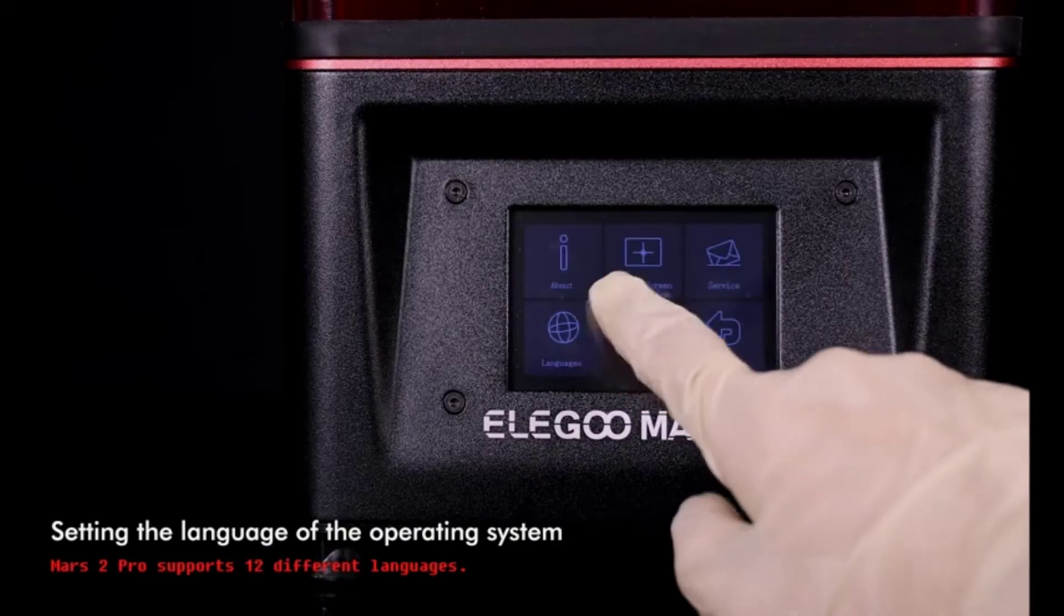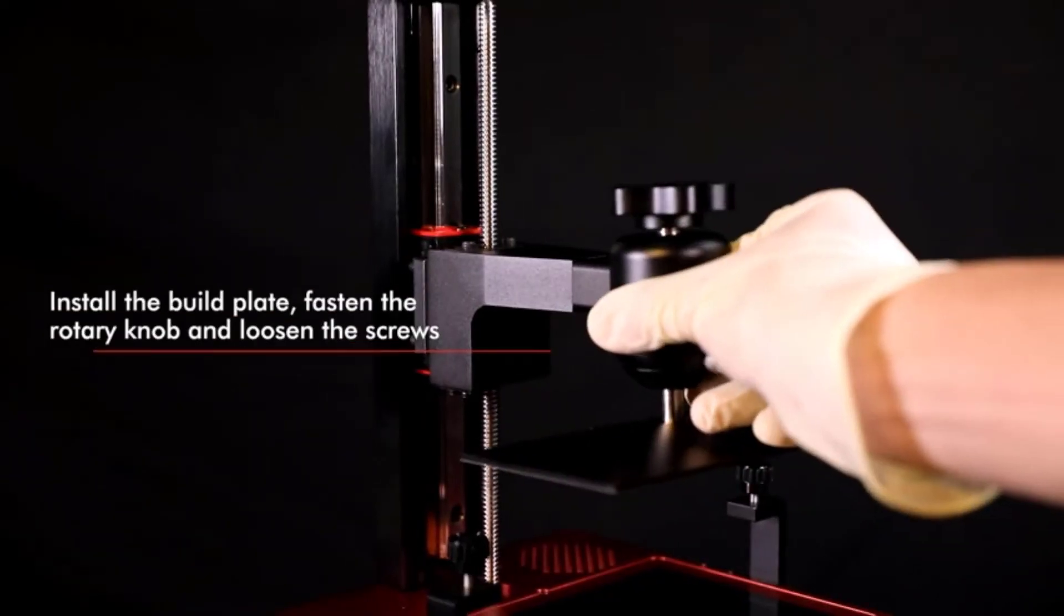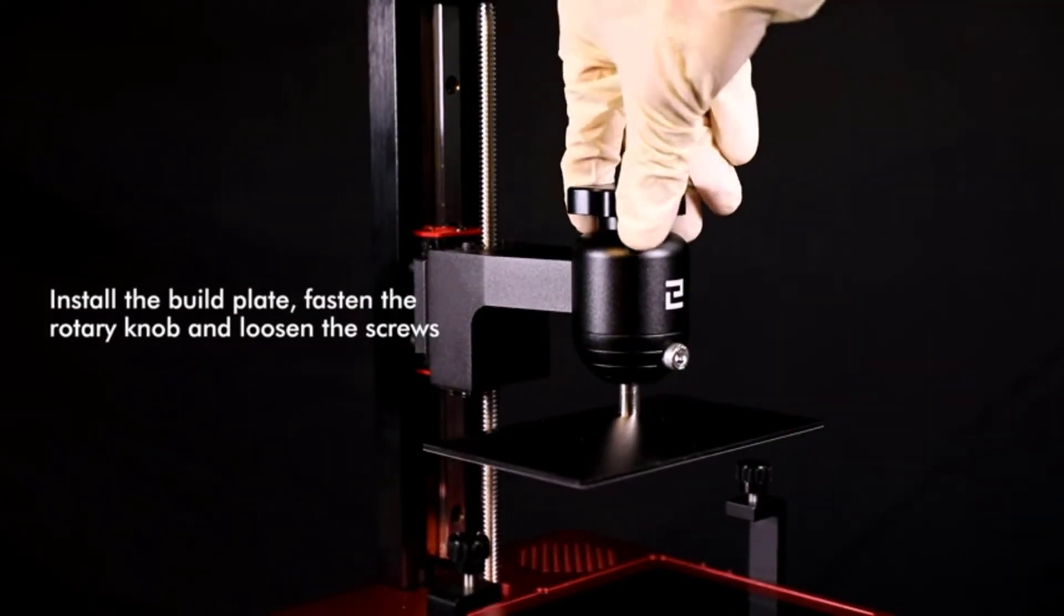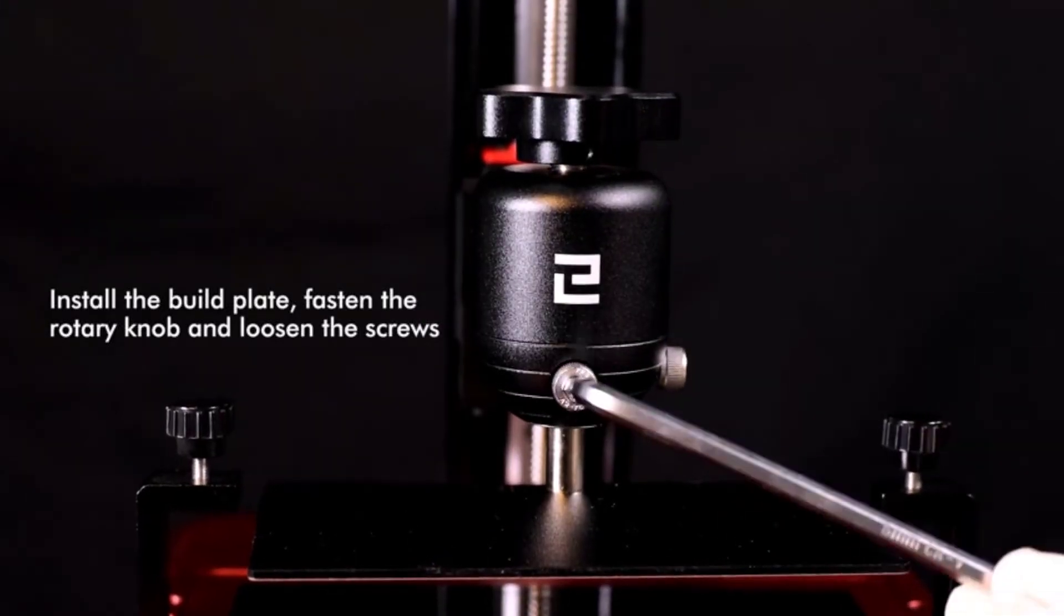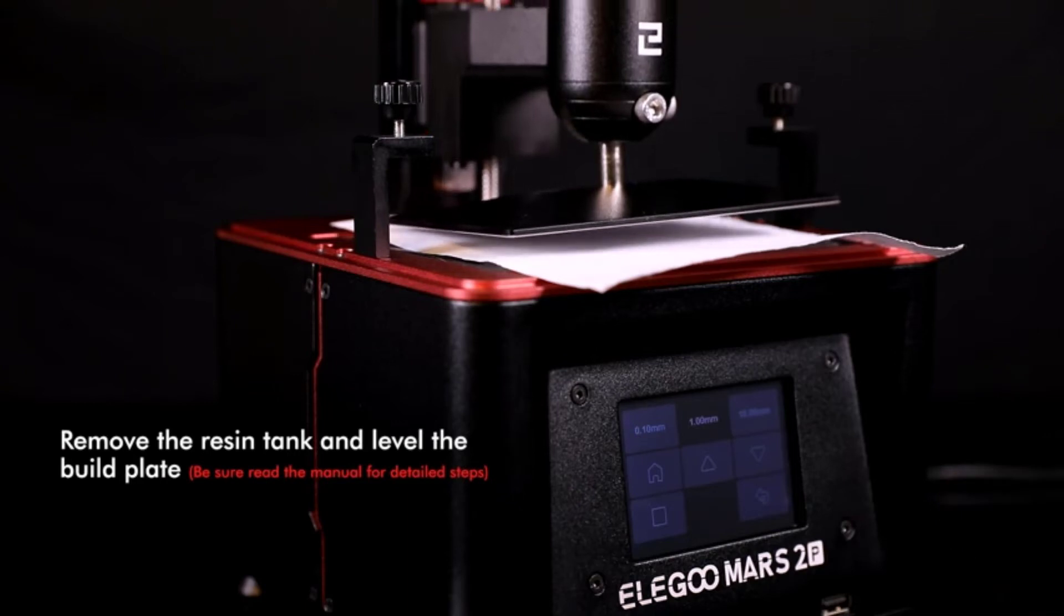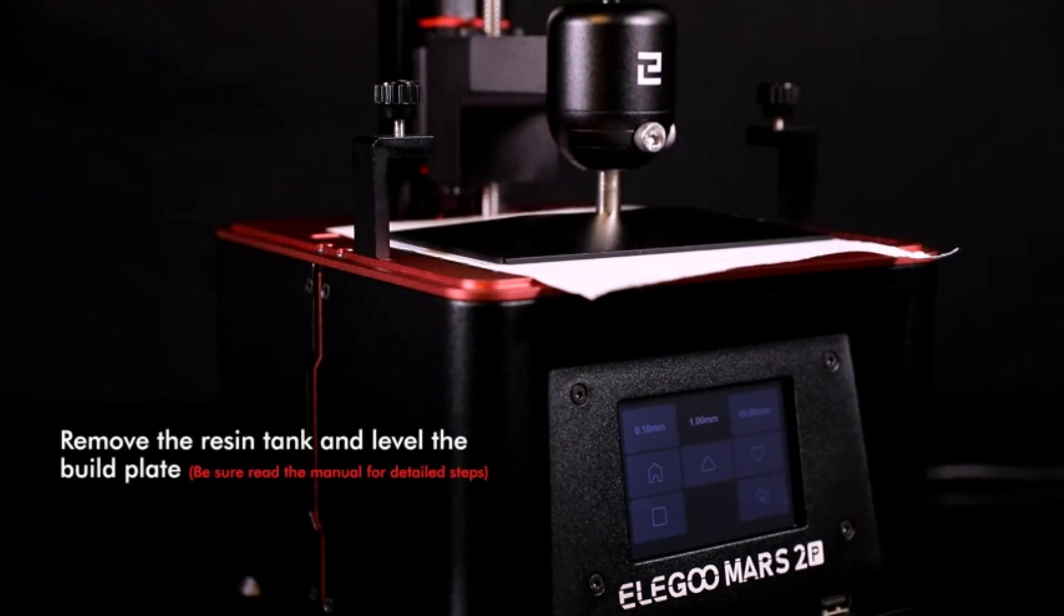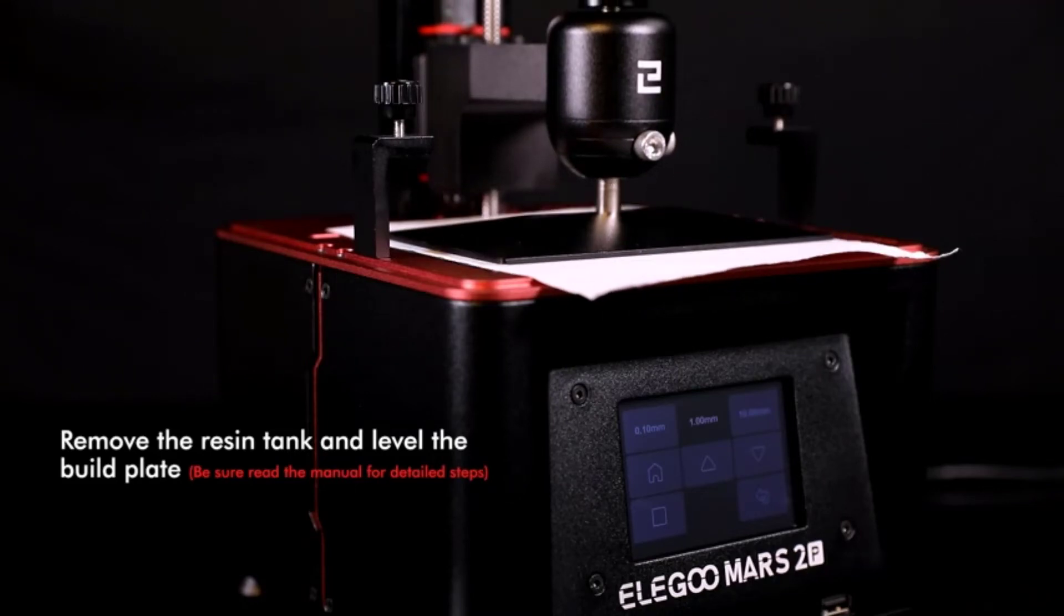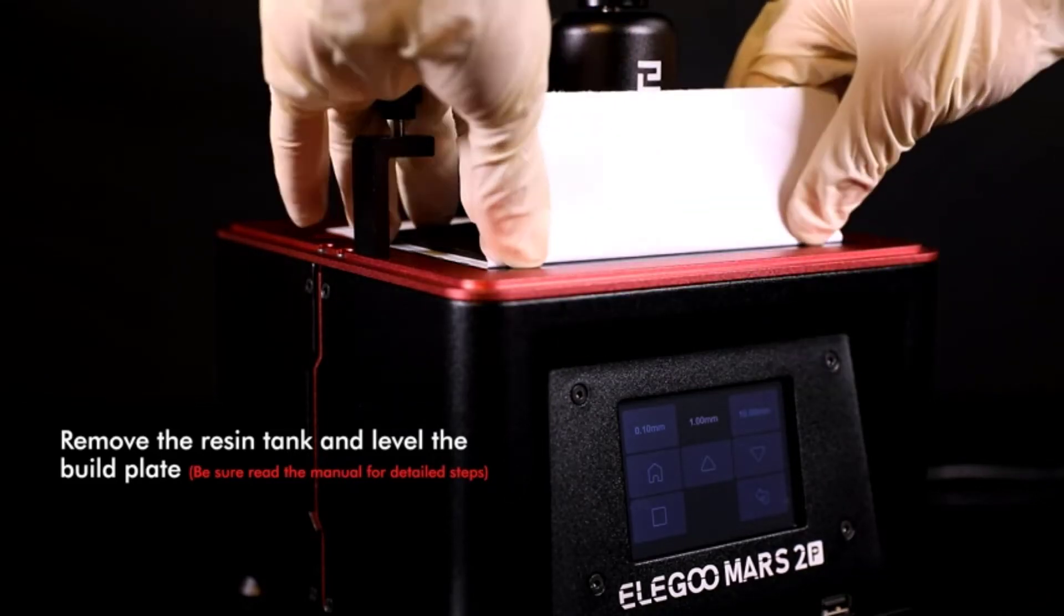The monochrome LCD curing screen delivers a good resolution. Unfortunately, the Elegoo Mars 2 Pro doesn't come with a 4K screen. Oddly enough, though the Elegoo Mars 2 Pro replaces the Mars Pro, its 2K resolution is actually lower than the 1620x2560 panel on the Mars Pro.